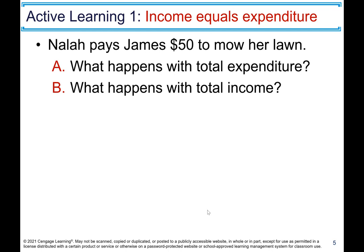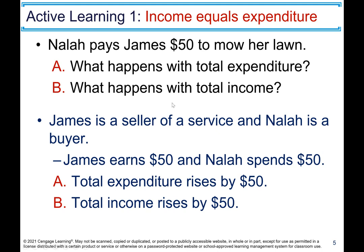Active Learning 1: Income equals expenditure. Nala pays James $50 to mow her lawn. What happens with total expenditure? What happens with total income? James is a seller of a service and Nala is a buyer. James earns $50 and Nala spends $50. Total expenditure rises by $50 and total income rises by $50.